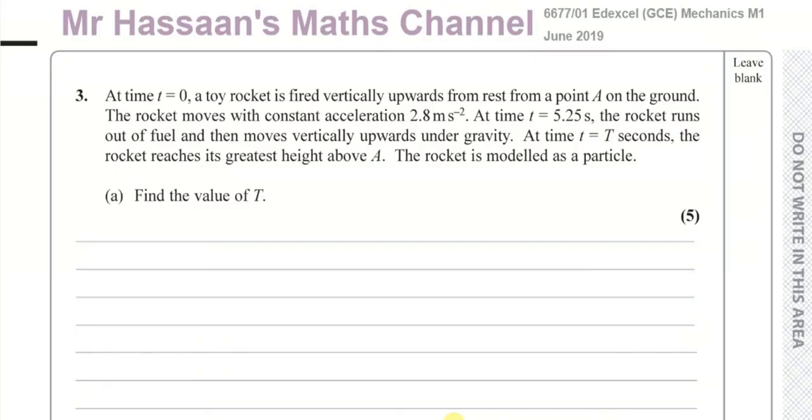Welcome back to Mr. Hassan's Maths Channel. I'm now answering question number three from this M1 paper of June 2019, the GCE syllabus. At time t equals zero, a toy rocket is fired vertically upwards from rest from a point A on the ground. The rocket moves with constant acceleration 2.8 meters per second squared. At time t equals 5.25 seconds, the rocket runs out of fuel and then moves vertically upwards under gravity. At time t equals capital T seconds, the rocket reaches its greatest height above A. The rocket is modeled as a particle. Find the value of T.